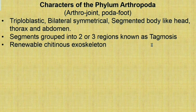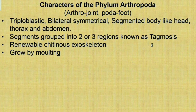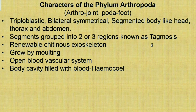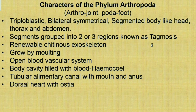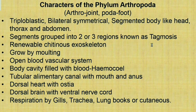A chitinous exoskeleton is found in Arthropoda animals, made of a special carbohydrate called chitin. Growth occurs by the moulting process, by which they remove their exoskeleton. They have an open blood vascular system; the body cavity is filled with blood called hemocoel. A tubular alimentary canal with mouth and anus is present. They contain a dorsal heart with ostia, a dorsal brain with a ventral nerve cord. Respiration occurs by gills, trachea, book lungs, or sometimes cutaneous respiration.